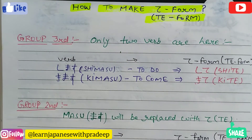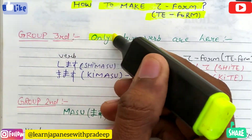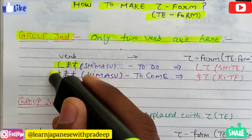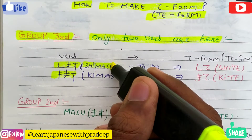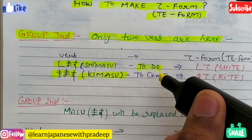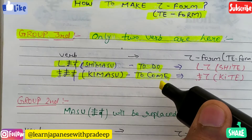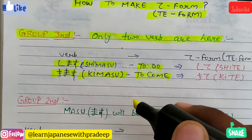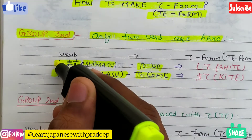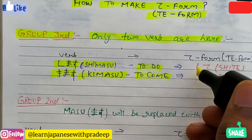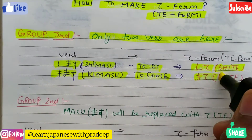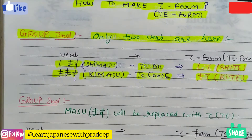Let's start with Group 3. We all know that there are only two words in Group 3: first is shimasu, which means 'to do', and second is kimasu, which means 'to come'. The te form of Group 3 verbs is fixed as usual, so shimasu te form would be shite, and kimasu te form would be kite.